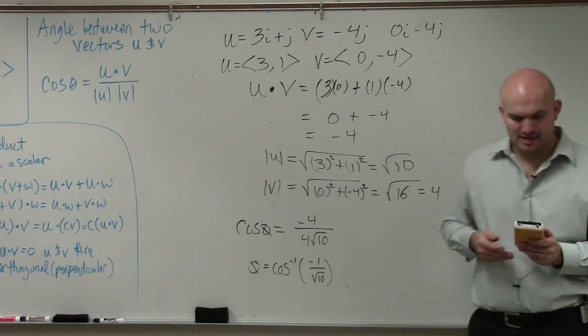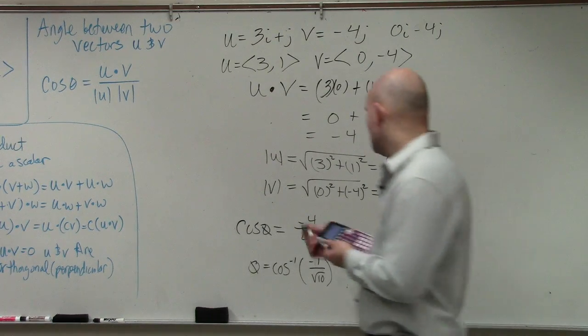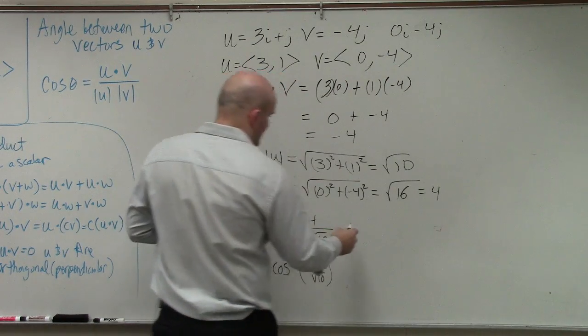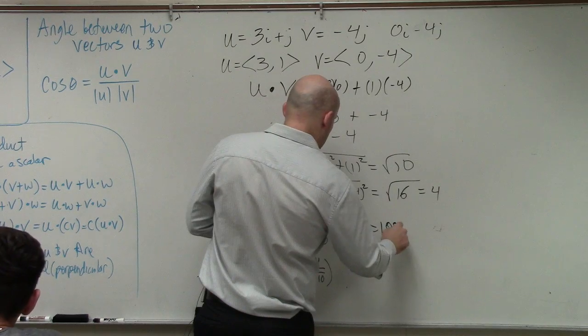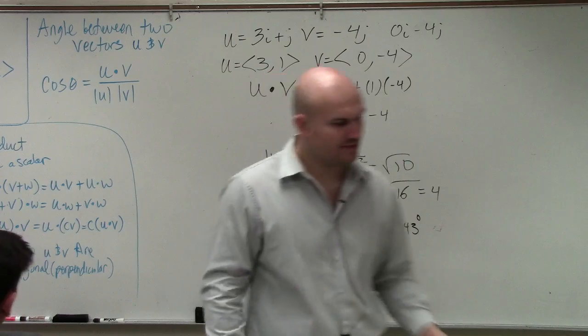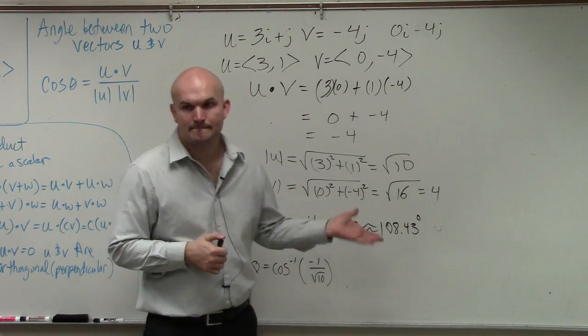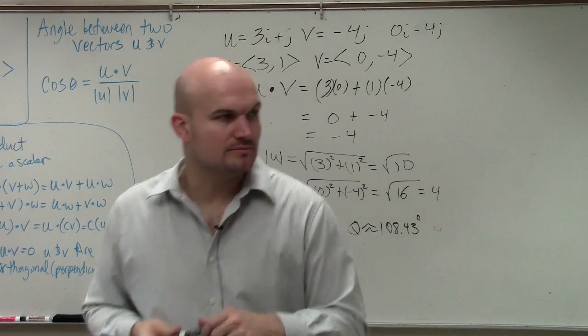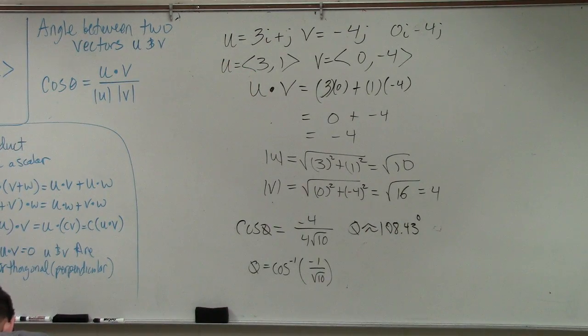And I get 108.43. So depending on how I ask for it, we'll just use the hundredth until I tell you something different. So finding the angle between two vectors is basically it.